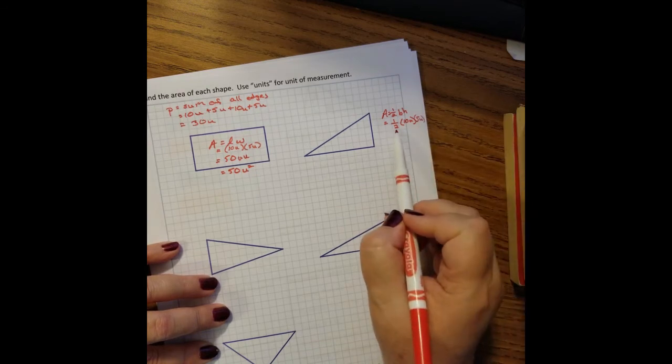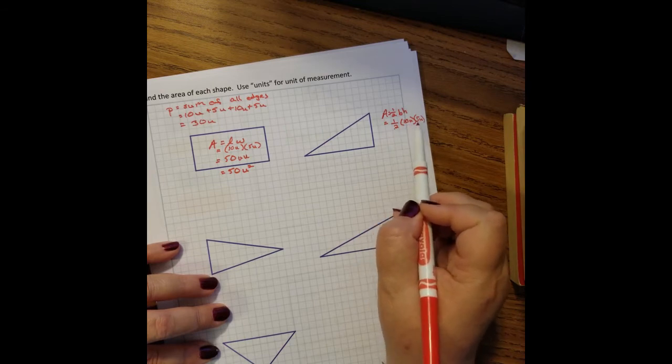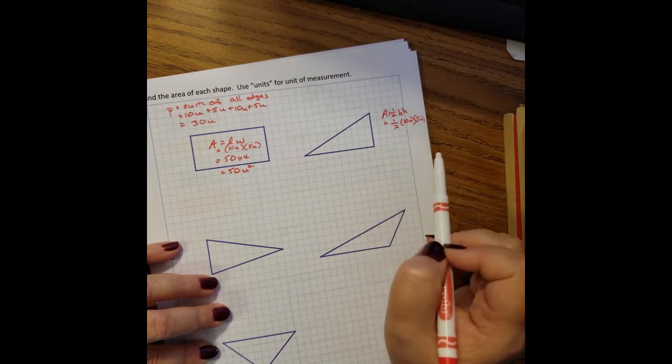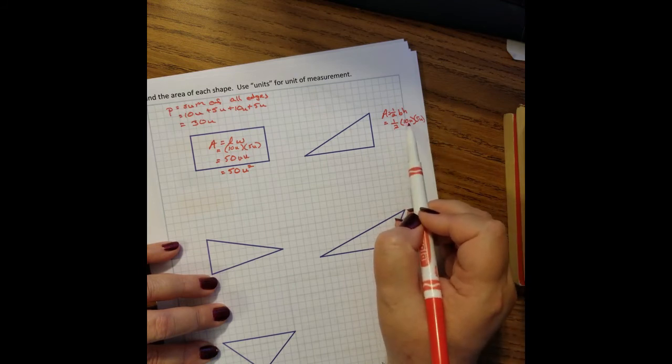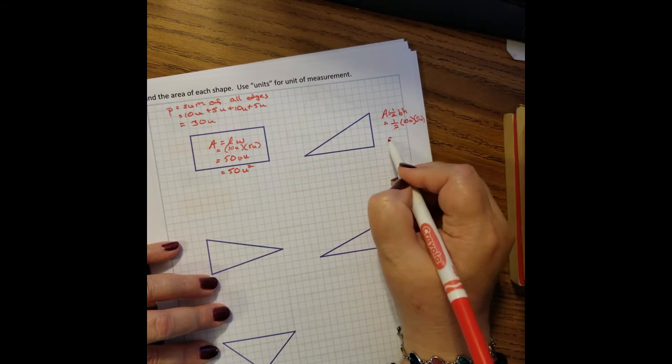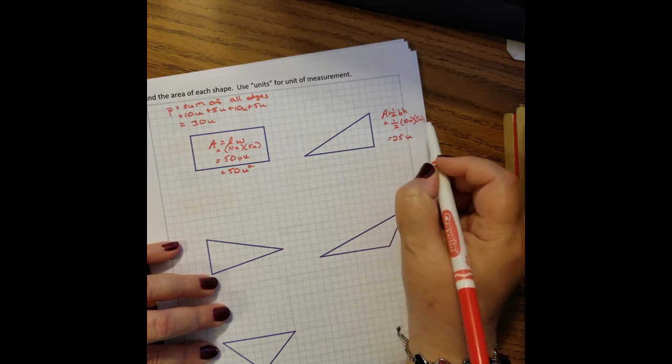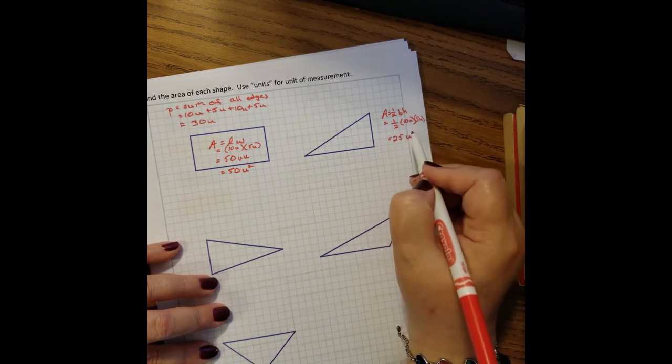Okay, so the reason why I like the half is because you can take a half of the ten or half of the five, or you can multiply the ten and the five and then take half of that. So most people, we're going to do half of ten is five, so five times five is going to be 25 units. Unit times unit is unit squared.